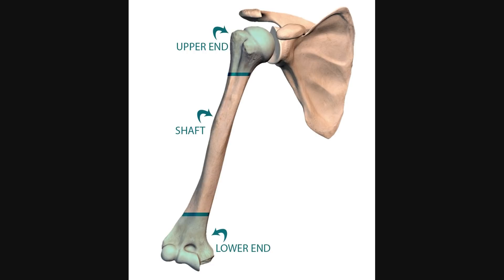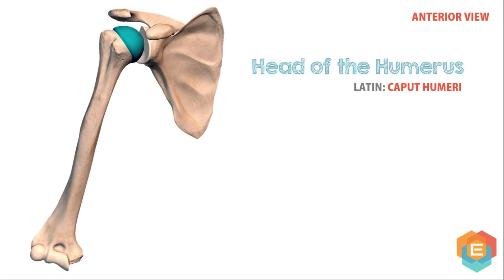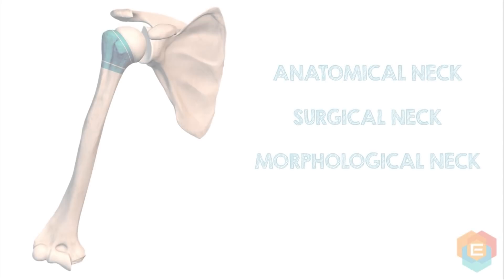The upper end consists of: 1. Head. The head of the humerus is smooth, rounded and makes one third of a sphere. It is encompassed by an articular hyaline cartilage, which in turn is thicker in the core and thinner at the periphery.